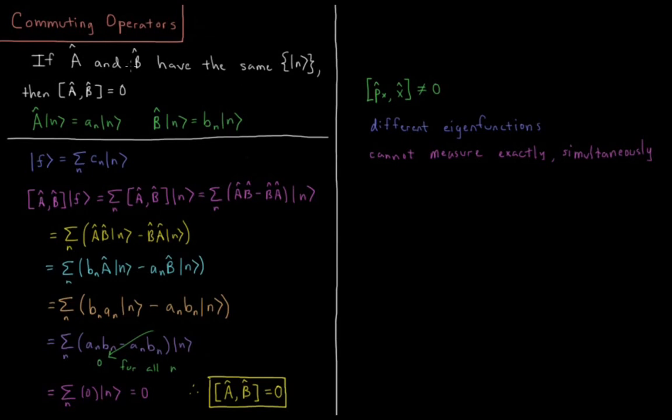So when operators commute, they have the same set of eigenfunctions, and vice versa. When operators have a common set of eigenfunctions, they commute with one another.